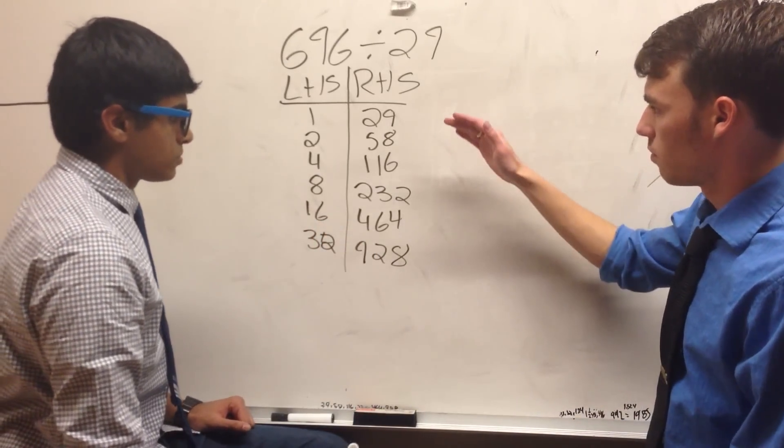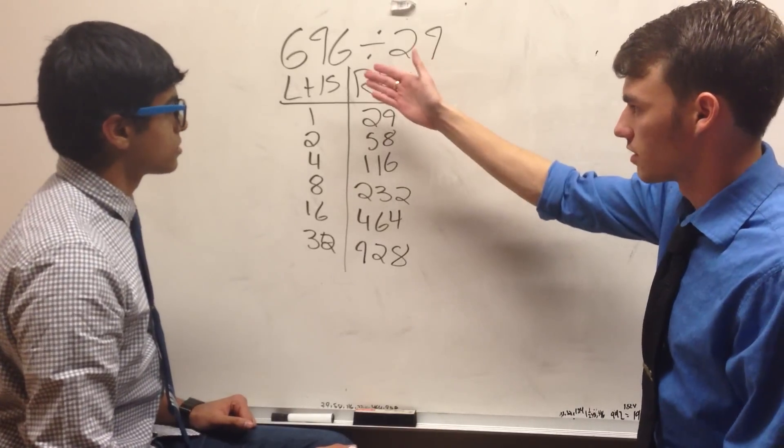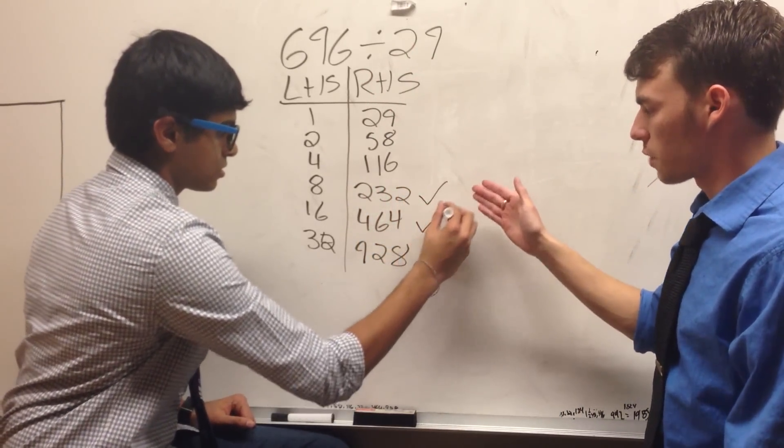We look at our right-hand side and see what two numbers add up to make our divisor, 696. Those are 232 and 464. Once we add those up, we'll get 696.